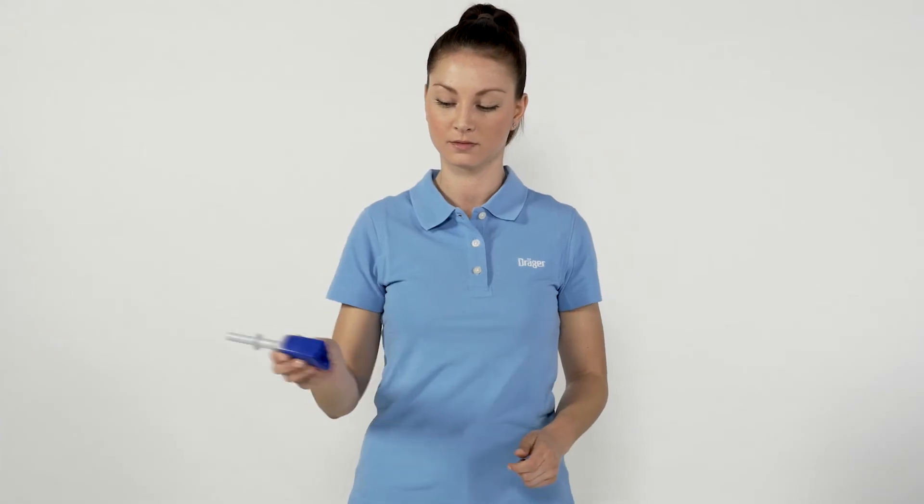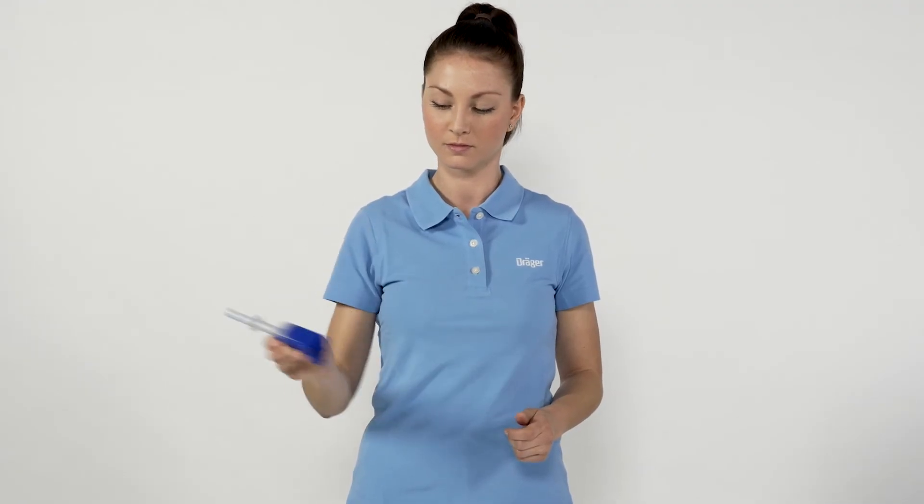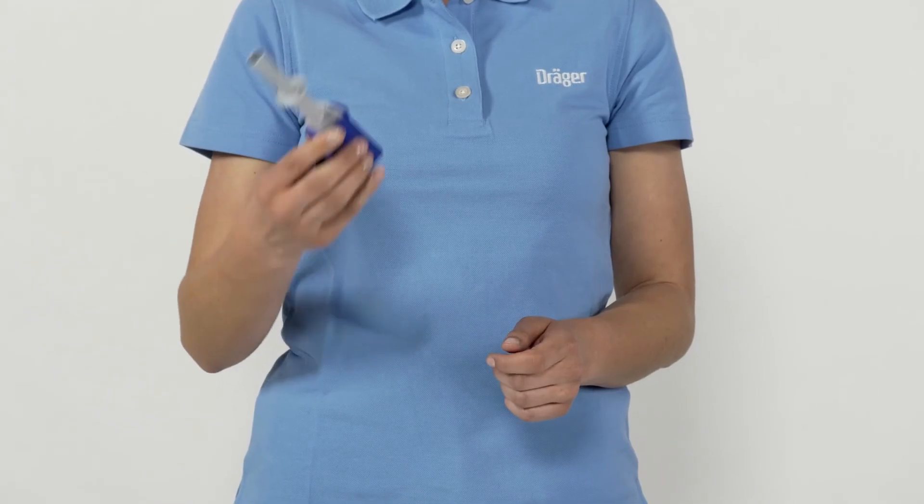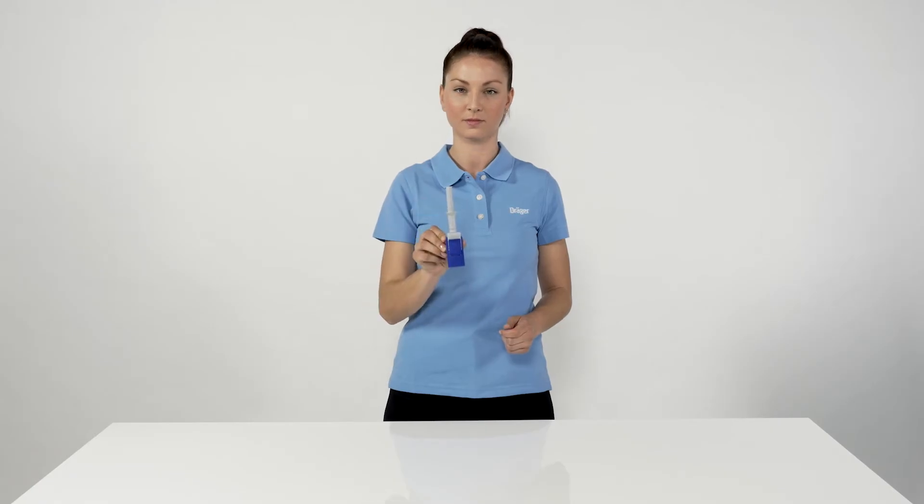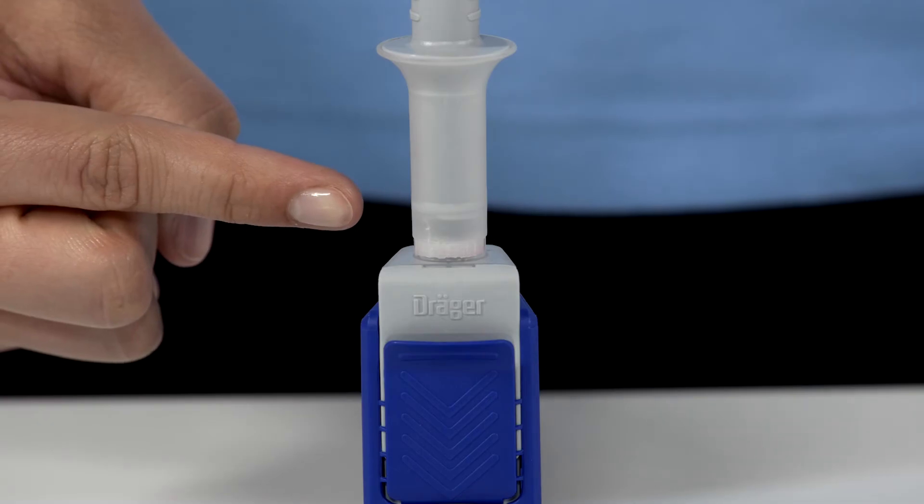Shake the test kit until the red indicator ring has completely discolored. Hold the test kit upright or stand it on an even surface. As you see, the red indicator ring has discolored.